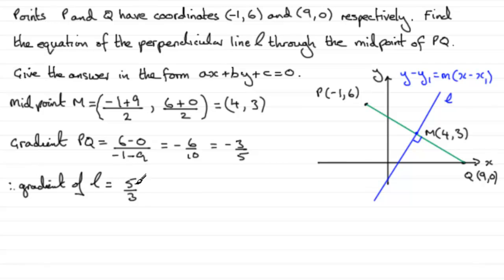So if you multiplied 5 thirds with minus 3 fifths, you'd get minus 1. The product of the gradients gives minus 1 when they're perpendicular.